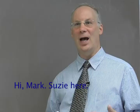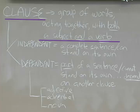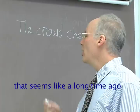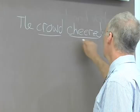By contrast with a phrase, the other key term for groups of words acting together is a clause. A clause is a group of words acting together with both a subject and a verb. Phrases lack subjects and verbs — they don't have them. Clauses have subjects and verbs. 'The crowd cheered,' which we started out this semester talking about, is a clause. Crowd is the subject, cheered is the verb; it's a group of words acting together. It's a clause.